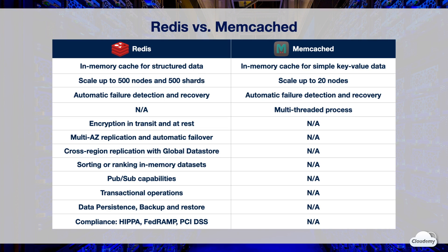Redis supports sorting and ranking of data. With Redis, you can read in-memory datasets in sorted order. Redis offers PubSub capabilities, which allow you to configure Redis to inform clients about events on the server. Redis supports transactions, which lets you execute a group of commands as an isolated and atomic operation. Redis lets you create point-in-time snapshots and persist in-memory data to disk. You can also configure Redis to log write requests received by the server.